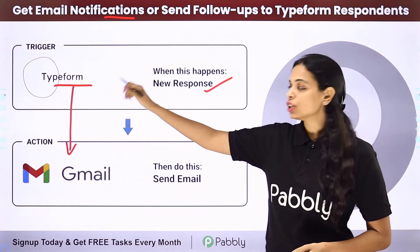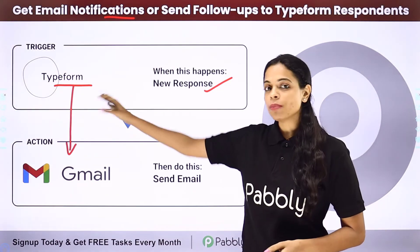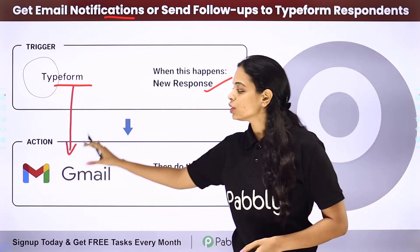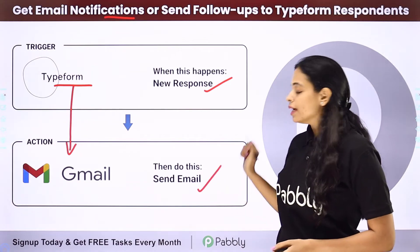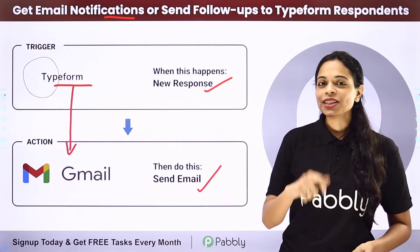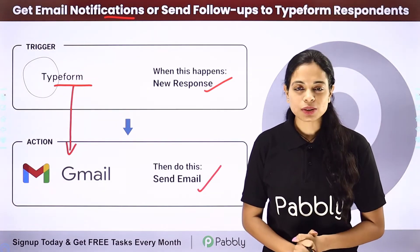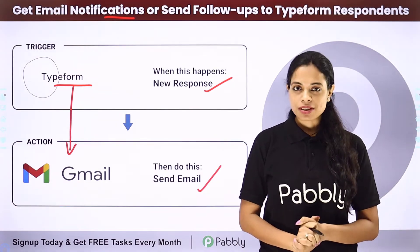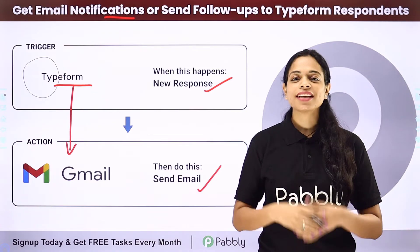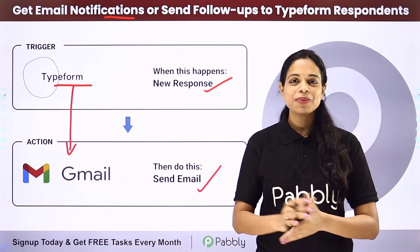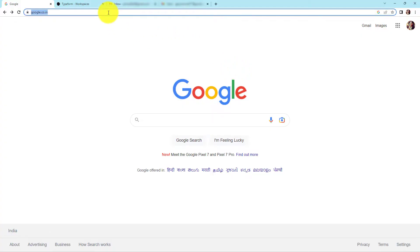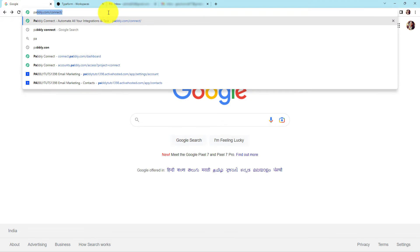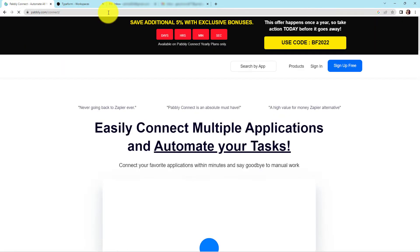Here, your trigger application would be Typeform and your action application would be Gmail. To understand how you can integrate and automate this entire process, let me take you to my screen. To begin, we are going to type the URL pably.com/connect.